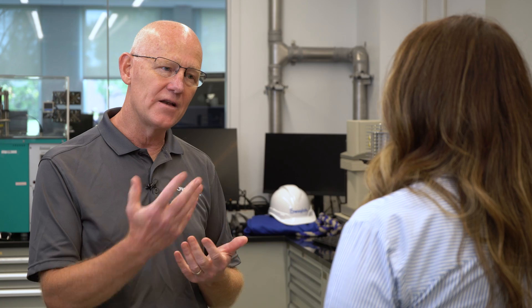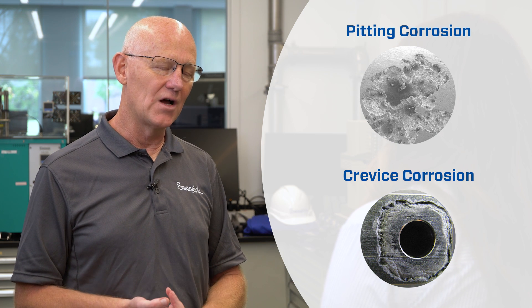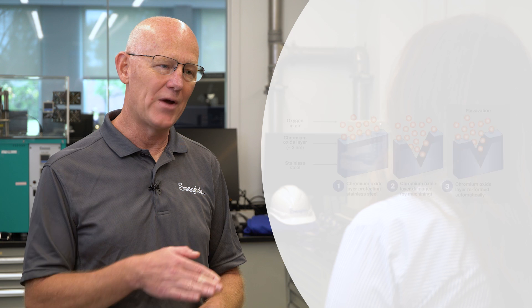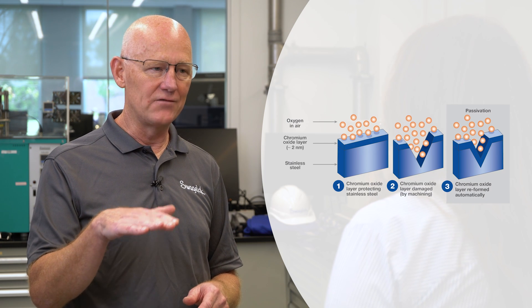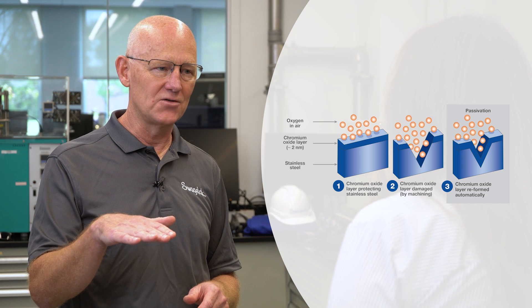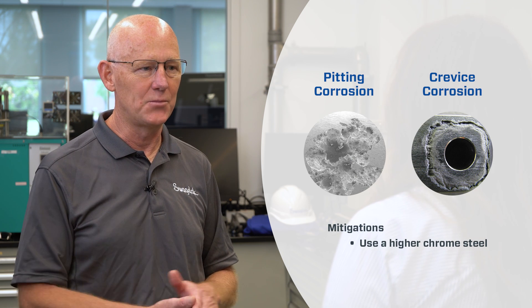The next type of corrosion is locally-influenced corrosion, and there's two types: pitting corrosion and crevice corrosion. Local corrosion occurs because of something called a passive oxide film that forms on most metals, and it provides a level of protection against corrosive environments. That corrosion-resistant oxide layer is enhanced by the chrome content in stainless steel. Using a higher chrome steel results in a more robust passive oxide film and better resistance to pitting and crevice corrosion.